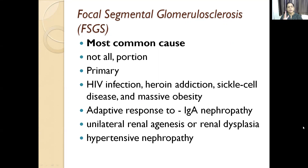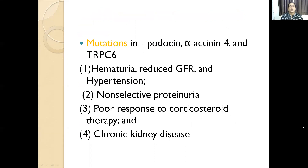It can be seen in children or adults. There is a genetic association — there can be mutations in podocin, alpha-actinin-4, and TRPC6.